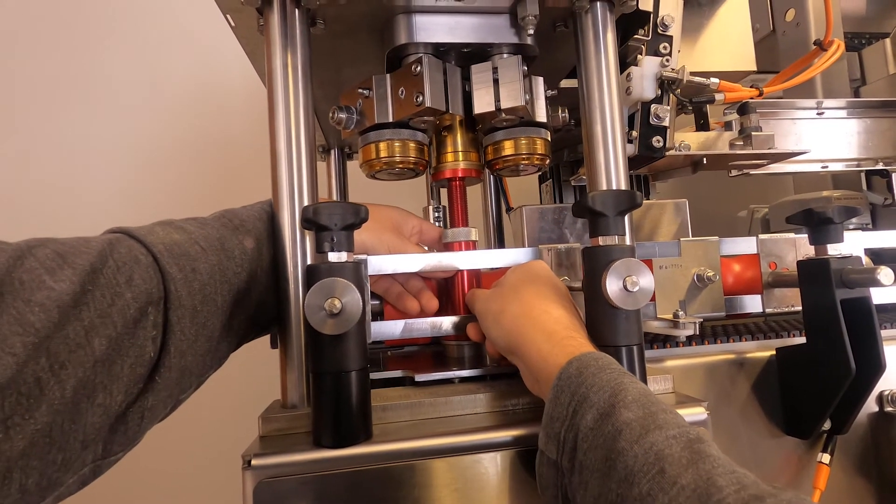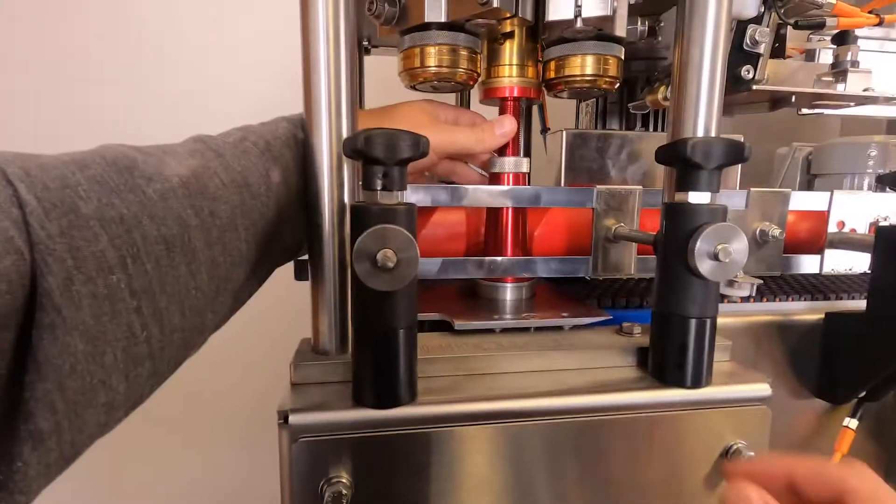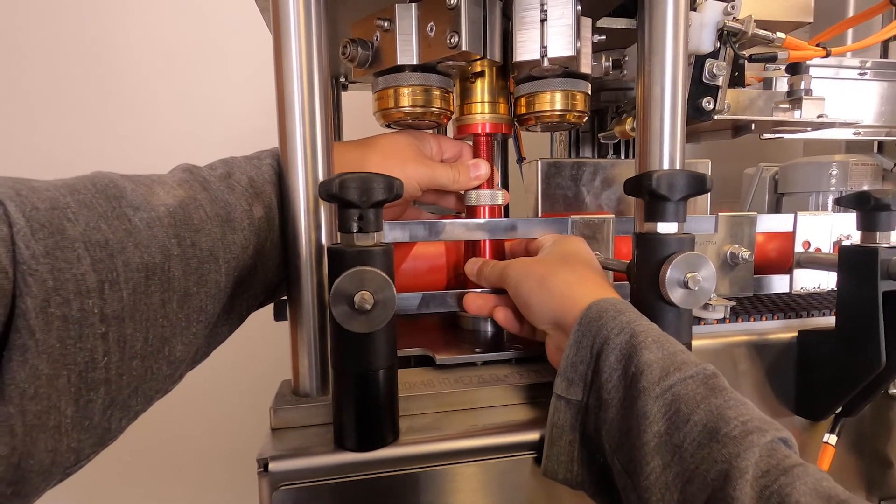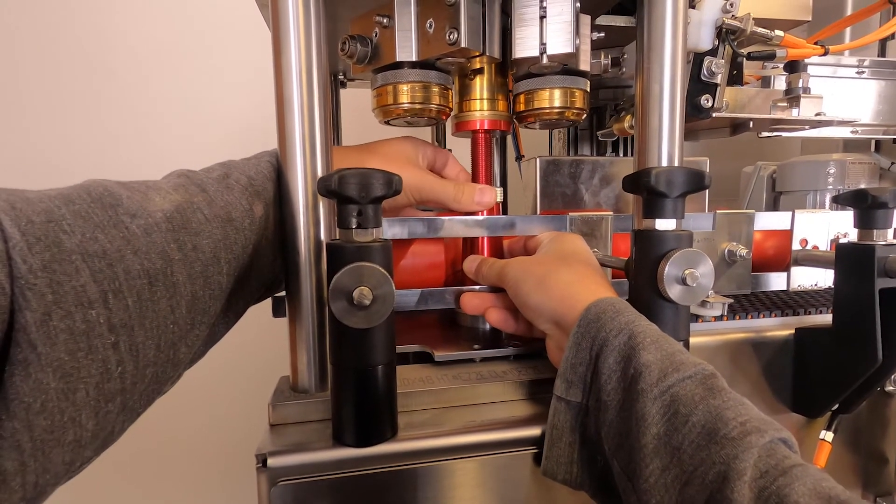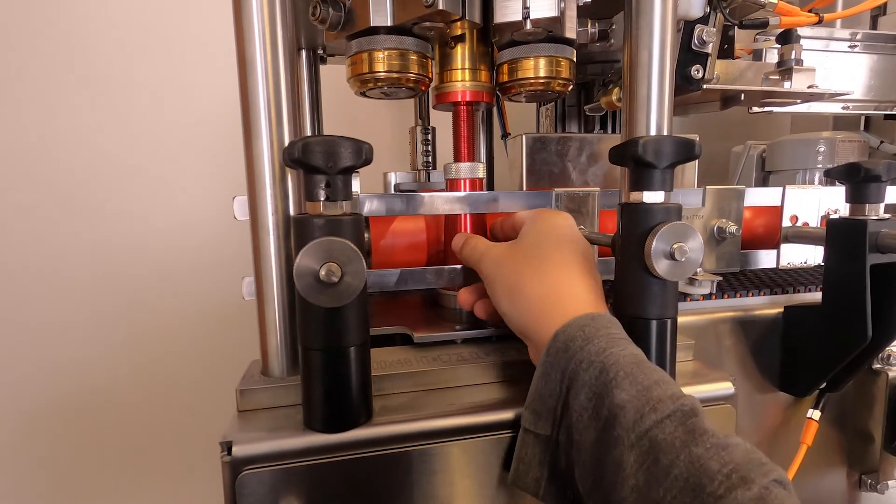Continue increasing the height of the gauge to the point where it requires two hands - one on the top of the gauge and one on the bottom - to slide the gauge back and forth. Once the proper tension is achieved, spin the collar into place to lock in the gauge height.